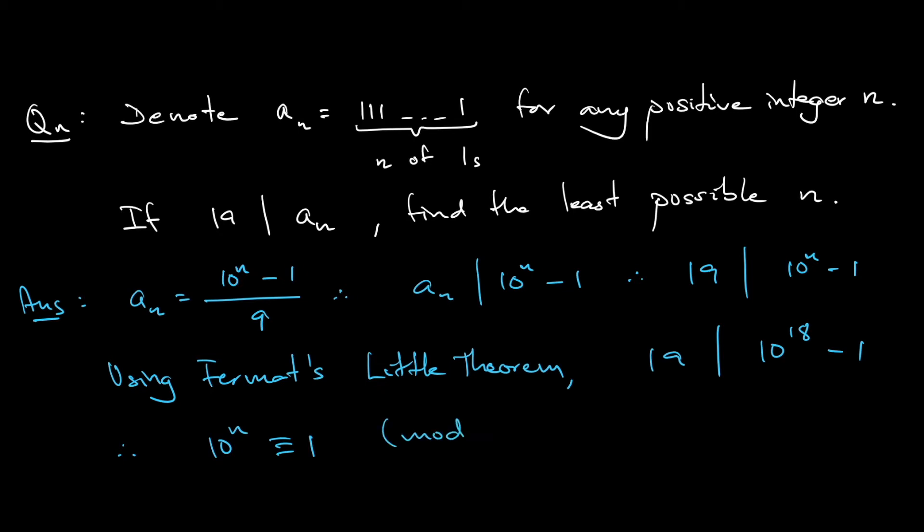Remember, just now 19 divided 10^n - 1. So from here, using together with Fermat's Little Theorem, that means n divides 18.